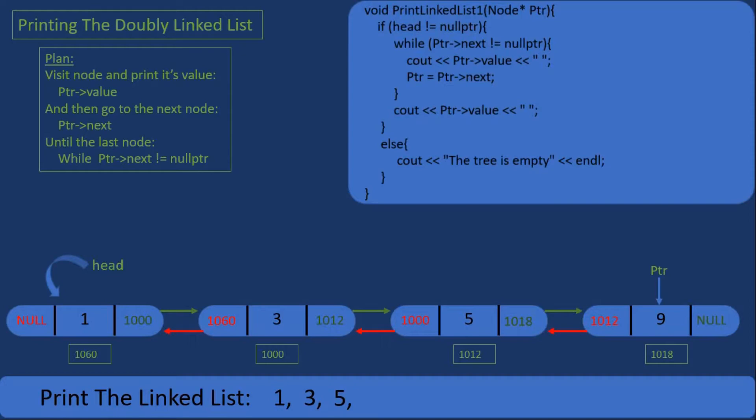After exiting the while loop, the statement outside is just to print out the value of the node ptr is pointing at, which is the last node with the value of 9. We've just printed out our doubly linked list. Now in a moment I will show you how to use this code in an actual doubly linked list project so we can test the add node functions we created in the previous video.